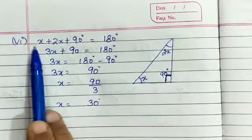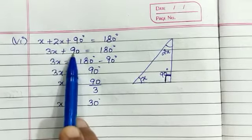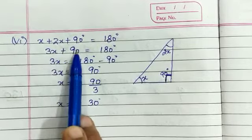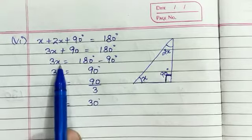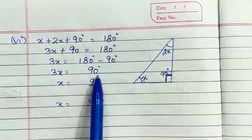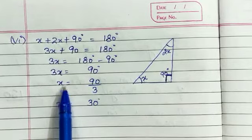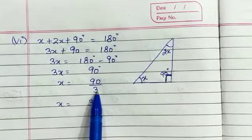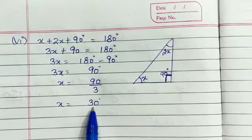X plus 2X gives us 3X. So 3X plus 90 is equal to 180. Moving 90 to the other side: 3X is equal to 180 minus 90, which is 90. So 3X equals 90. Dividing both sides by 3: X is equal to 90 divided by 3, so X is equal to 30 degrees.